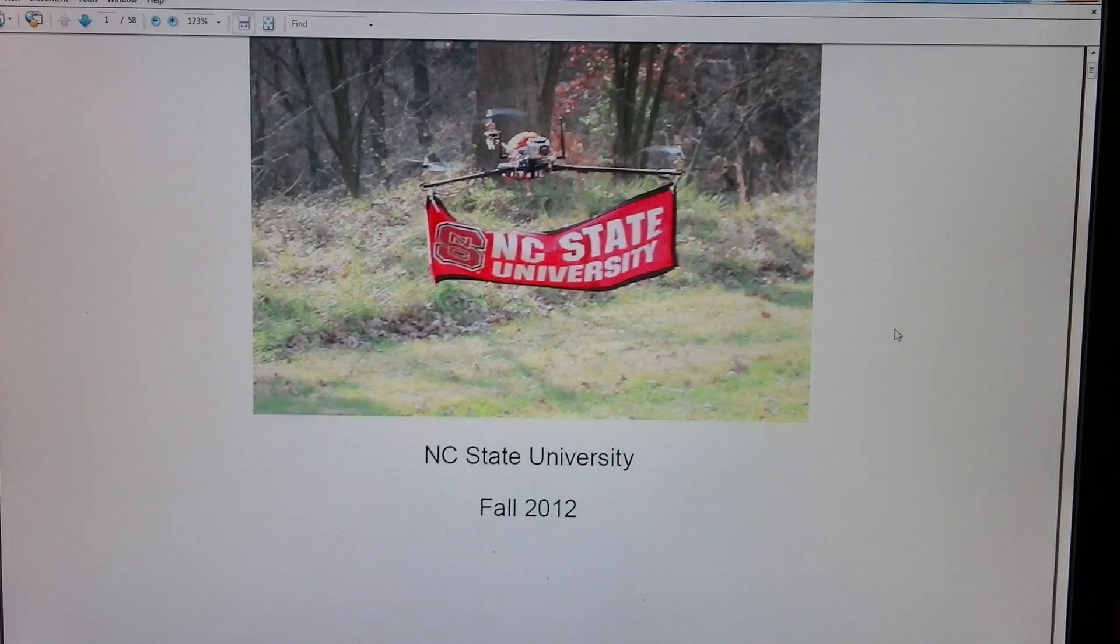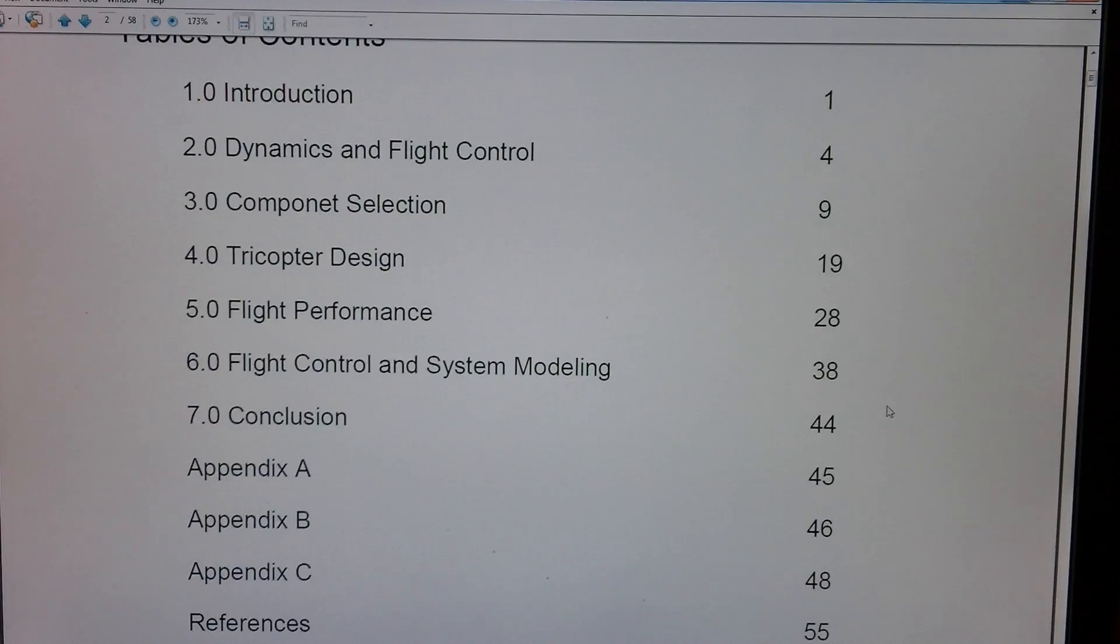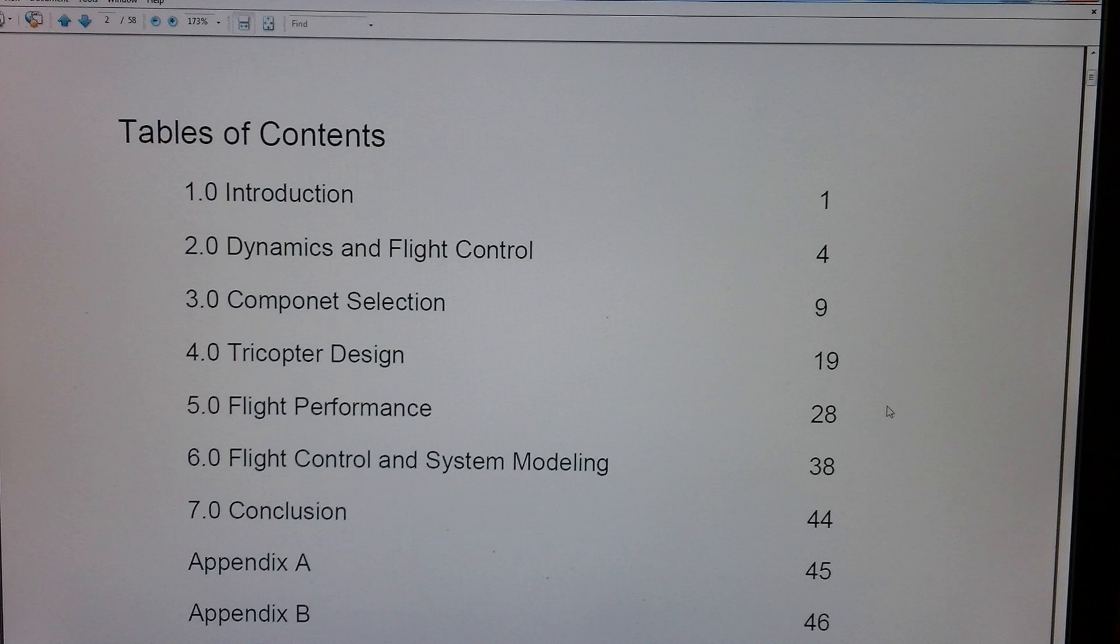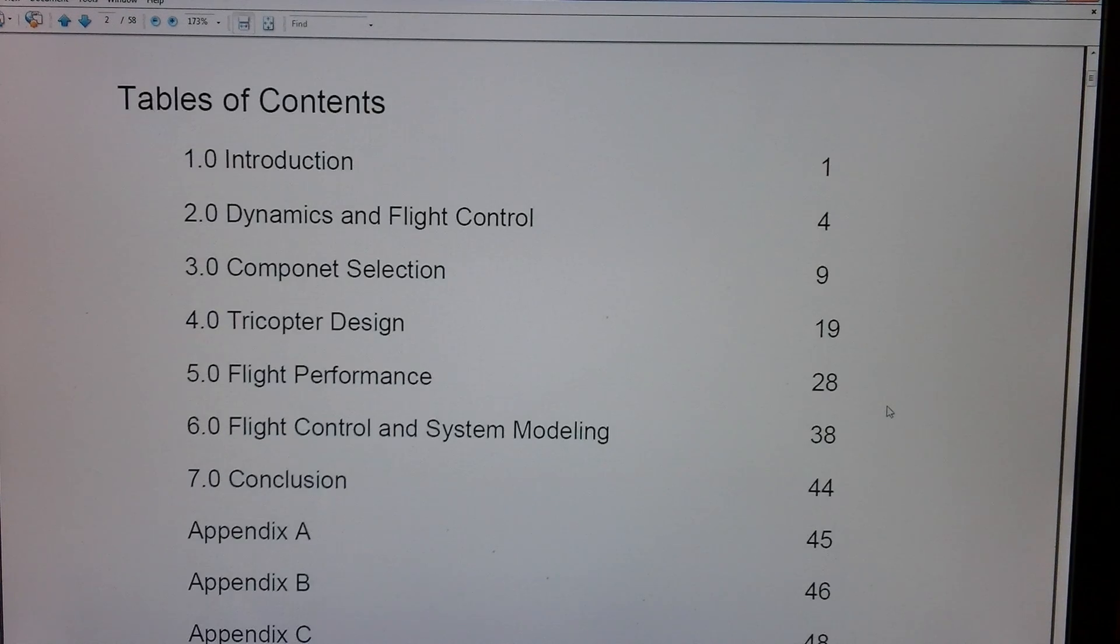This is a multi-page report. Obviously, it's around 60 pages or so. I looked at various different things, obviously an intro, dynamic flight control, component selection, tricopter design, which we'll talk about today, flight performance, flight control, and system modeling. For the flight controller, I did some basic modifications, but I basically used what was commercially available out there. I figured the tricopter design will be of interest, so we'll go over that today.